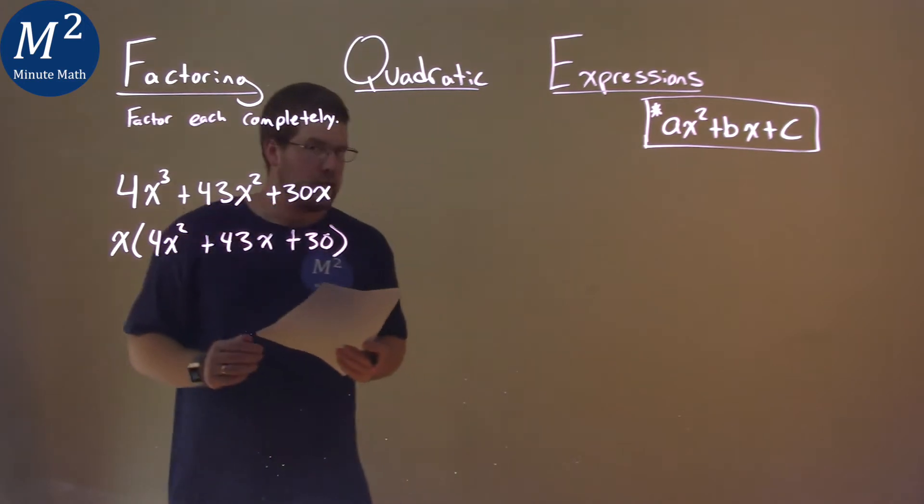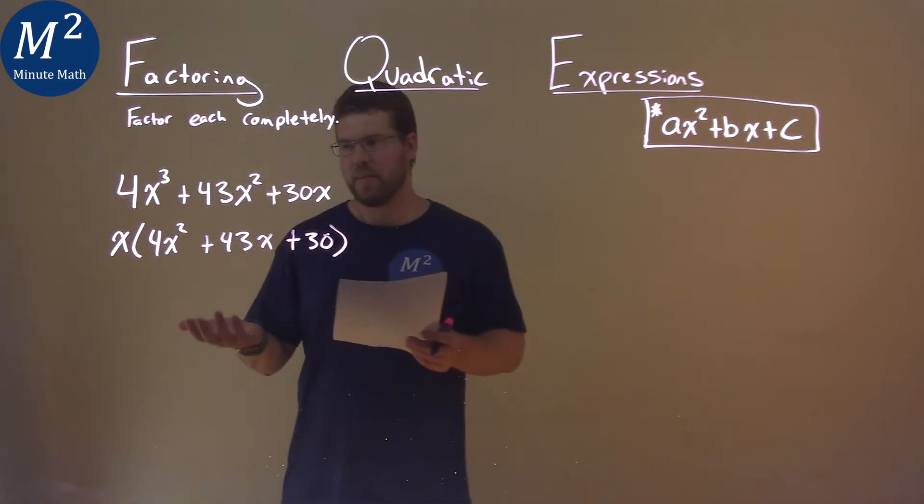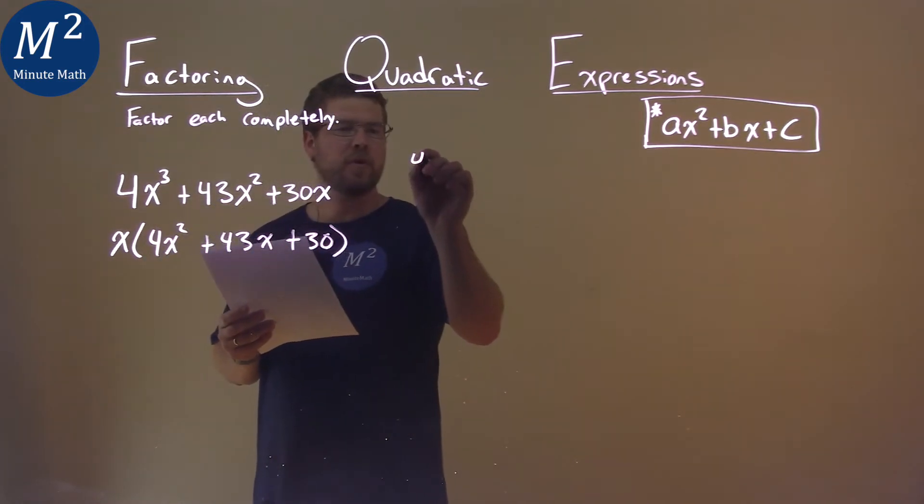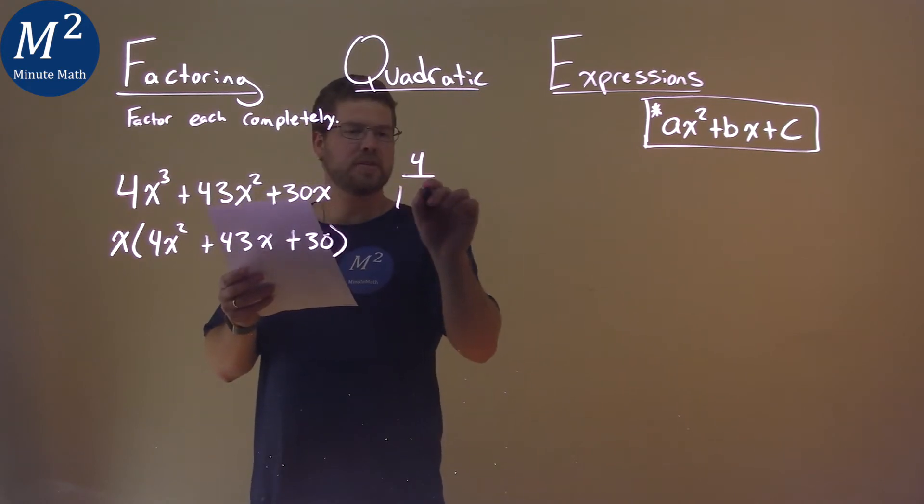Well, we now have a quadratic in the parentheses, and we can factor that. Our a value is 4, and 4 is either a combination of 1 times 4 or 2 times 2.